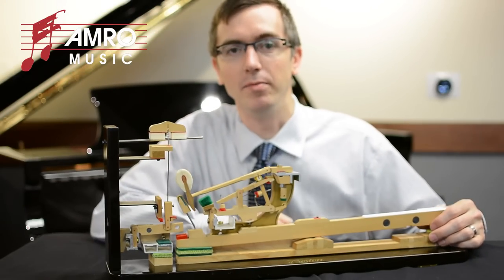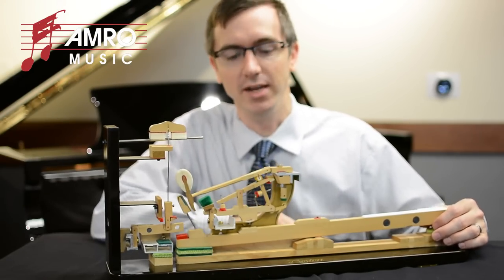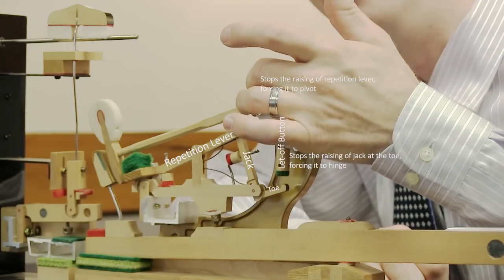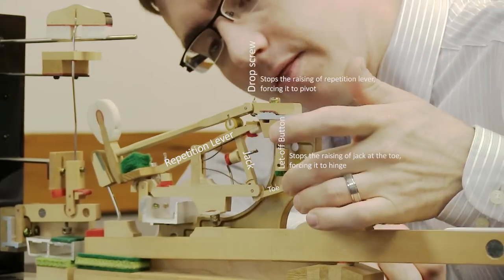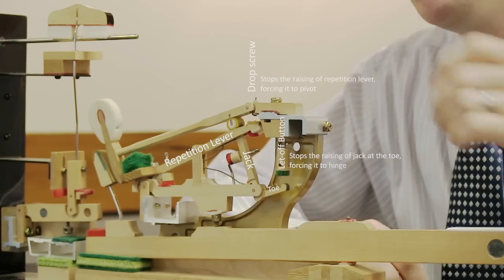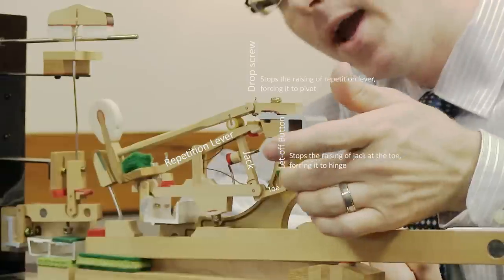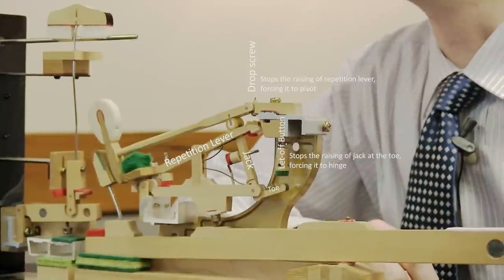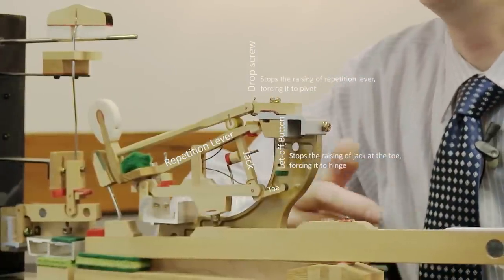Now, in the escapement mechanism there's a couple things that need to happen simultaneously. Take a look here at the drop screw and the let off button. As we raise the action by pressing the key, we need to make contact with these points here and here simultaneously. In a properly adjusted piano that happens.